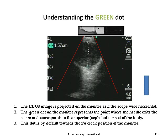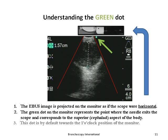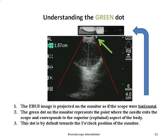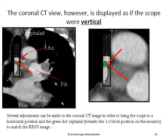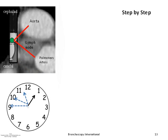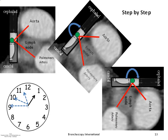The EBUS image is projected on the monitor as if the scope were horizontal. The green dot on the monitor represents the point where the needle exits the scope, which corresponds to the cephalad aspect of the body. This dot is by default towards the 1 o'clock position on the monitor. Several adjustments can be made to the coronal CT image in order to bring the scope to a horizontal position and the green dot cephalad to match the EBUS image — rotate the CT image clockwise to bring the scope to a horizontal position and the green dot towards 1 o'clock.